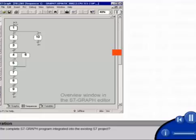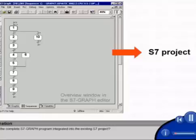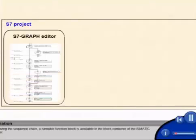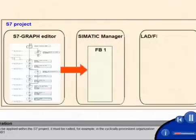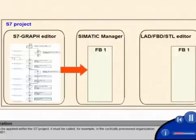How is the complete S7 graph program integrated into the existing S7 project? After saving the sequence chain, a runnable function block is available in the block container of the SIMATIC Manager. For it to be applied within the S7 project, it must be called, for example, in the cyclically processed organization block OB1.